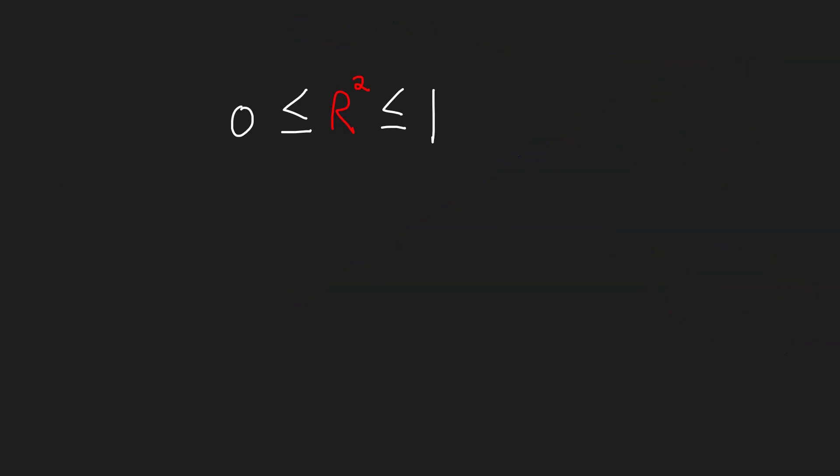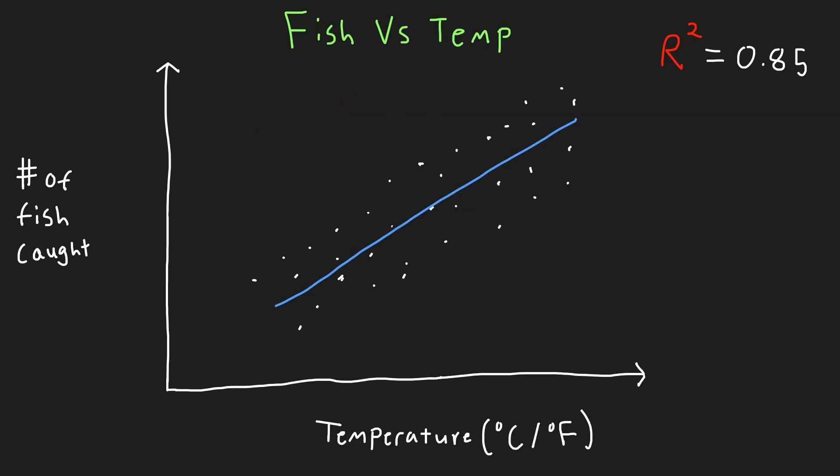It ranges from 0 to 1 and tells us how much of the data is described by our model. For example, let's say we found our model has an R squared value of 0.85. This means that our model is a good choice and a very strong fit with 85 percent of the variation in fish caught explained by temperature. Now that we know our line is strong with an R squared value of 0.85, we need to make sure it is also valid and appropriate.